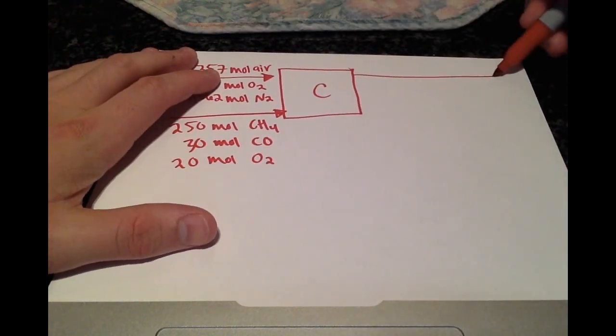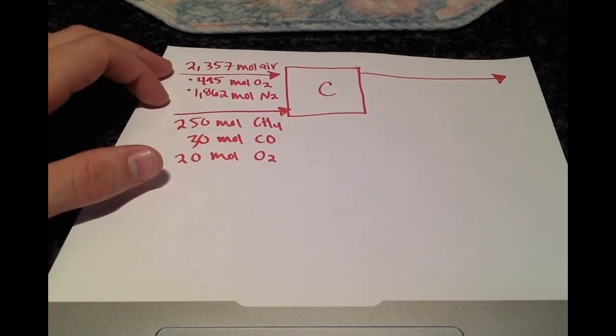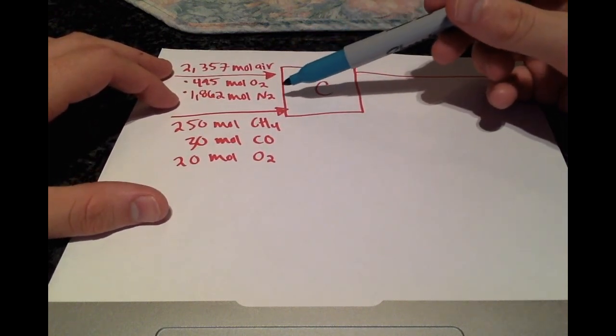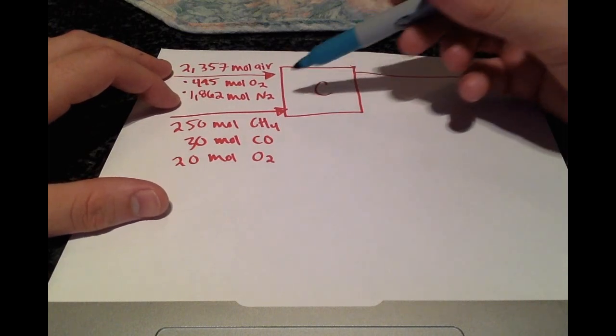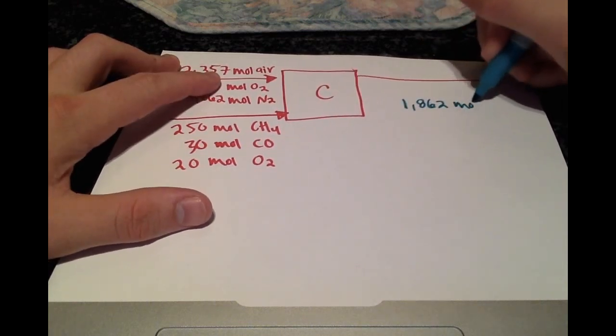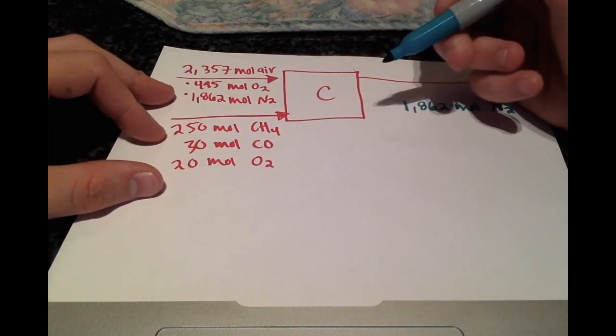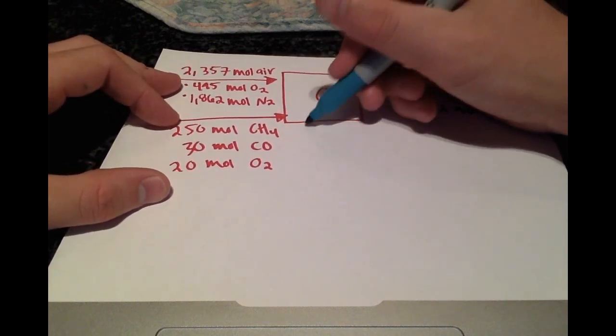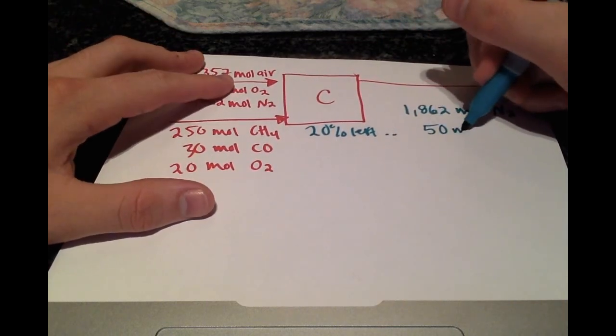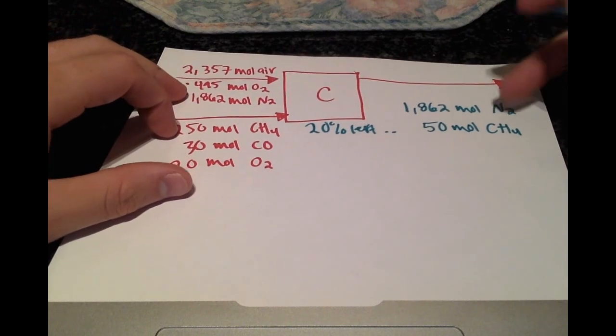Exiting, we want to find out the moles of each component so we can find the molar composition. What I like to do is look at each component and ask myself if it's involved in a reaction or how it's changing. The nitrogen is going to be the same in the product stream because it's not reacting with anything. The methane, we were told that 80% reacted so that means that 20% is left or 50 moles of methane is left over.